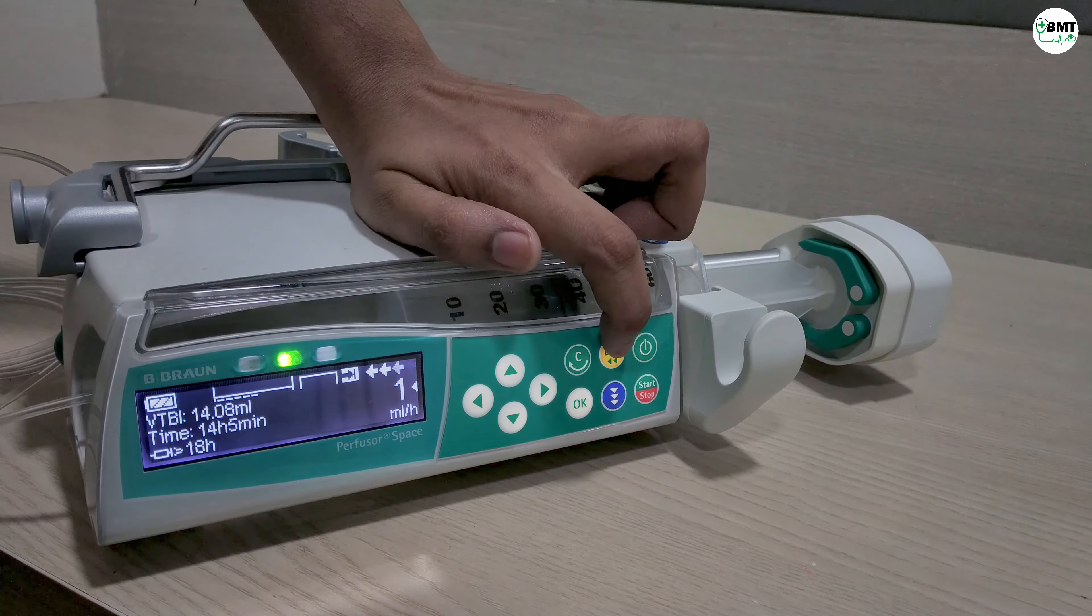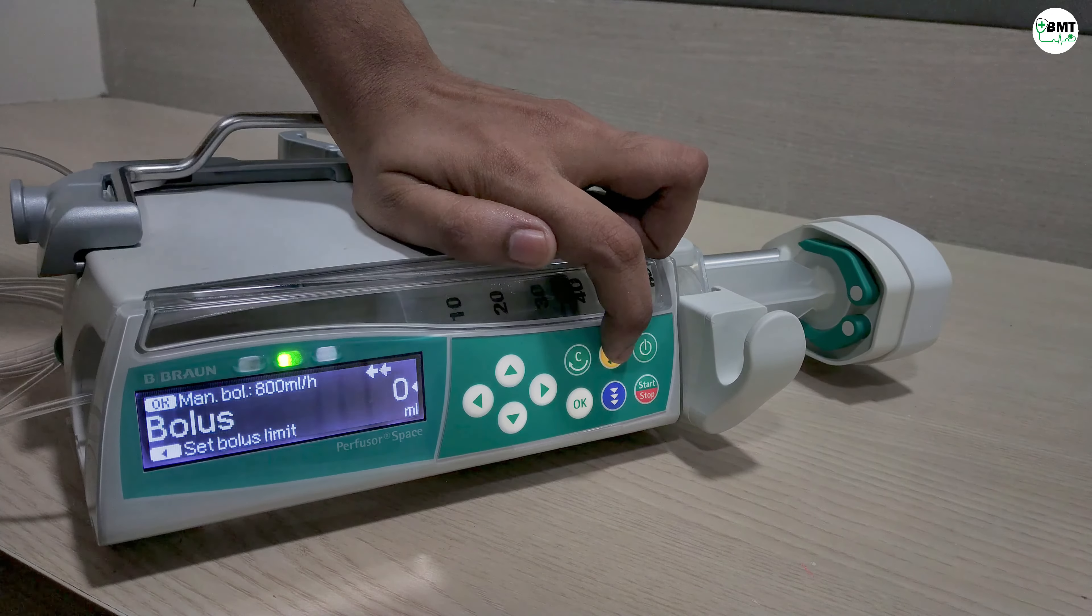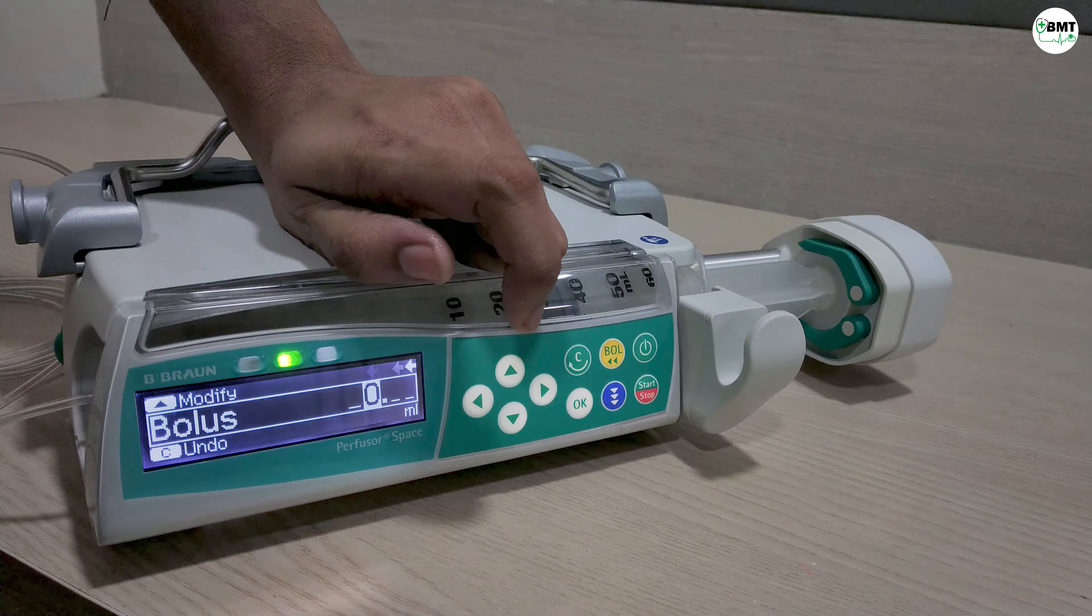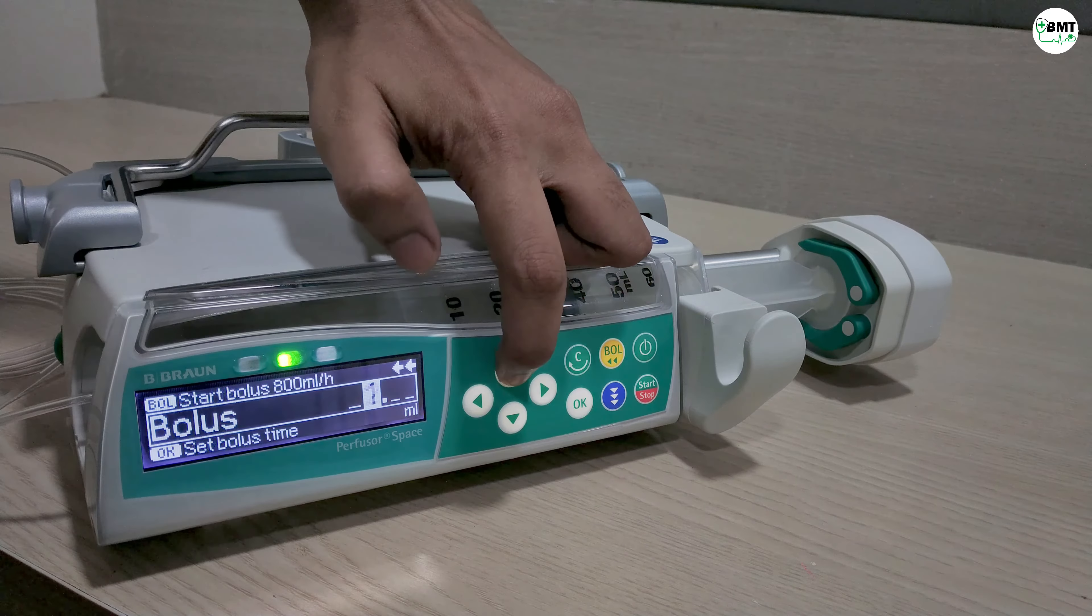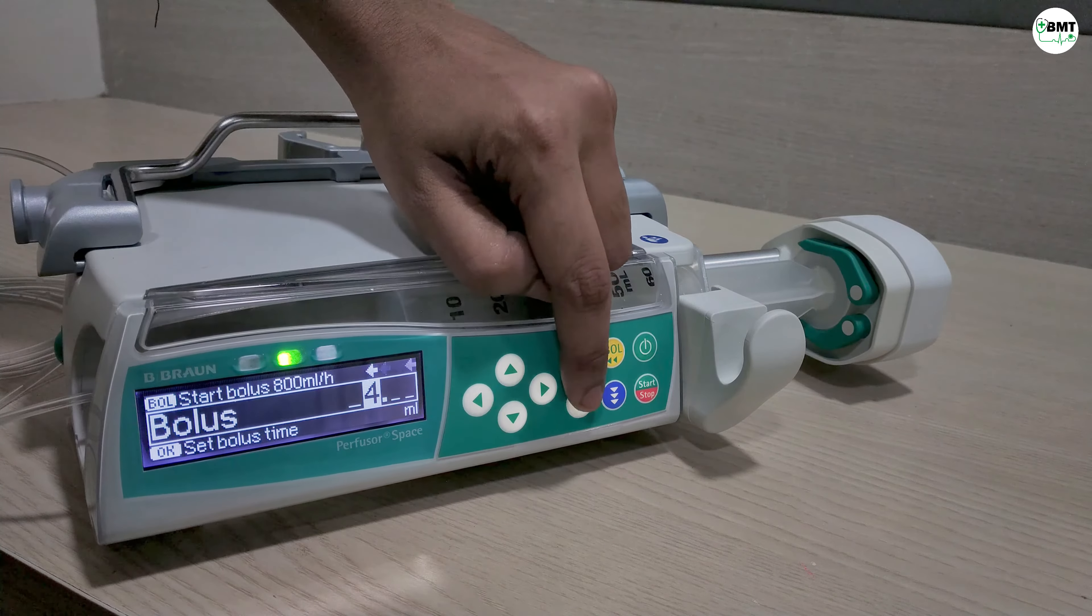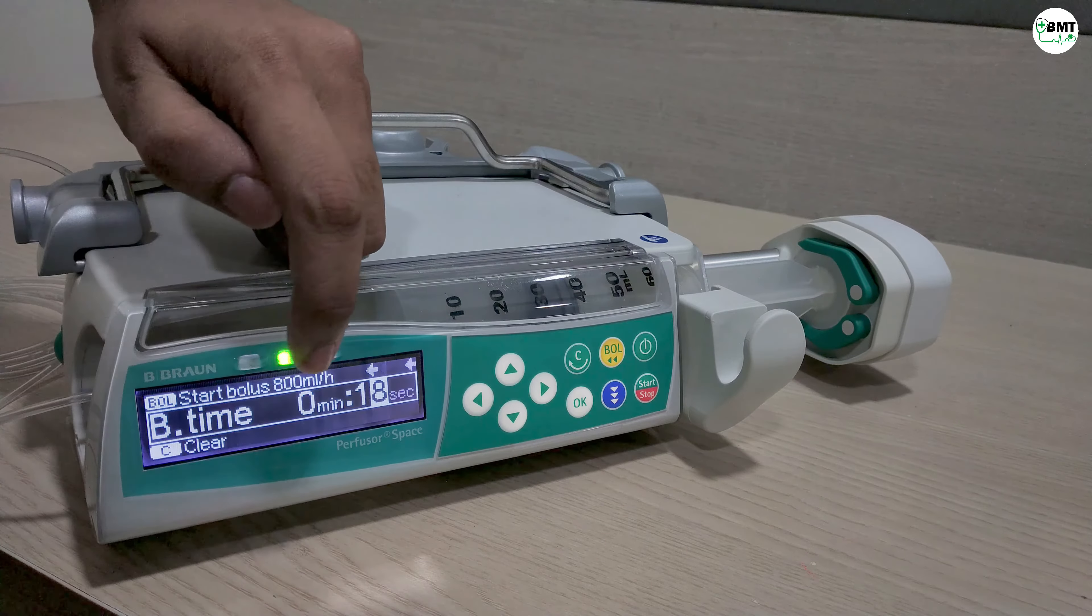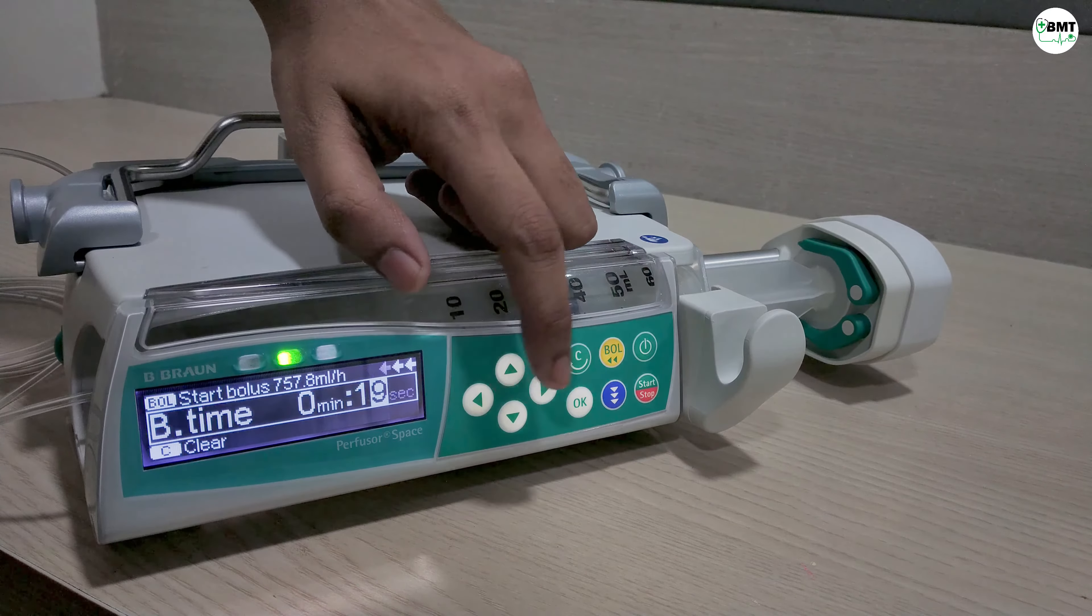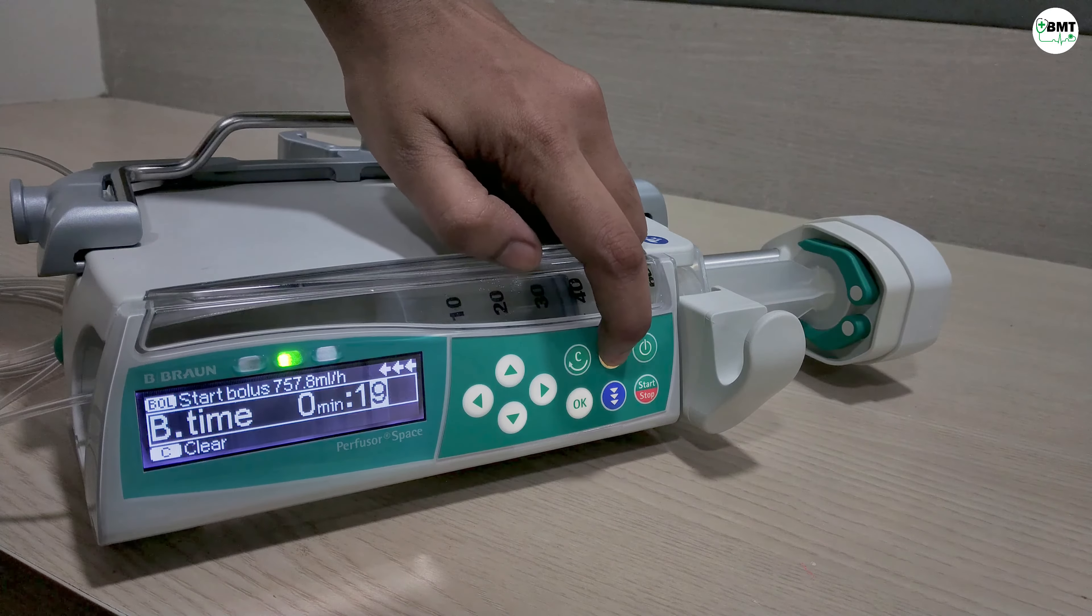How to give the bolus. Press on bolus, then CD side arrow. Set the bolus, then press OK. Set the bolus time. Then once set, start bolus.